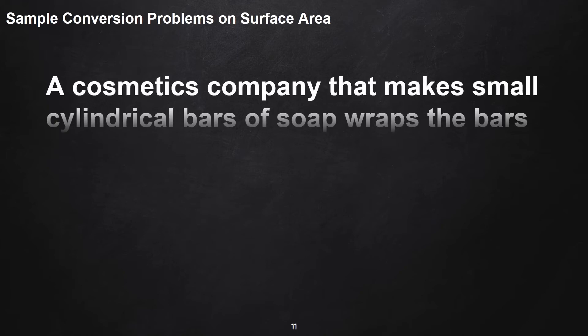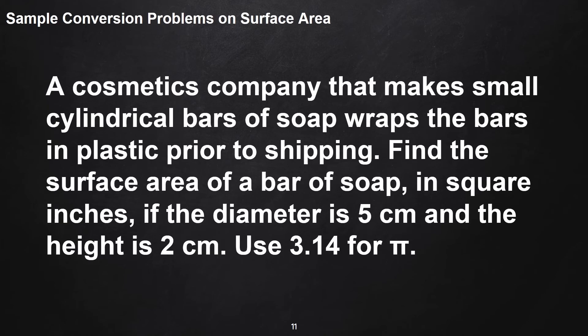A cosmetics company that makes small cylindrical bars of soap wraps the bars in plastic prior to shipping. Find the surface area of a bar of soap in square inches if the diameter is 5 centimeters and the height is 2 centimeters. Use 3.14 for π.